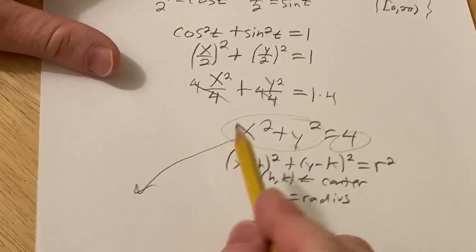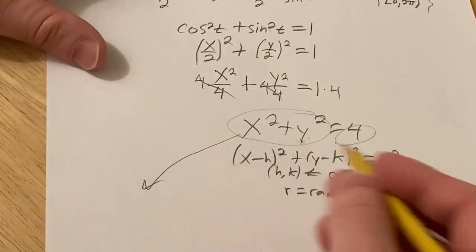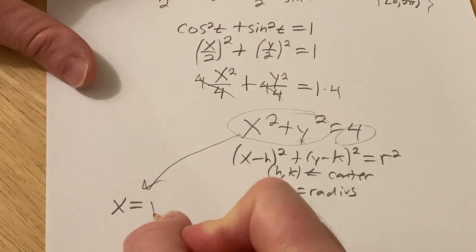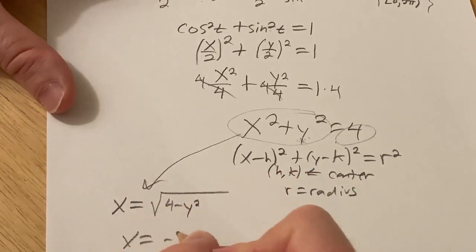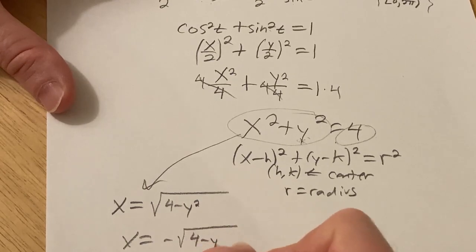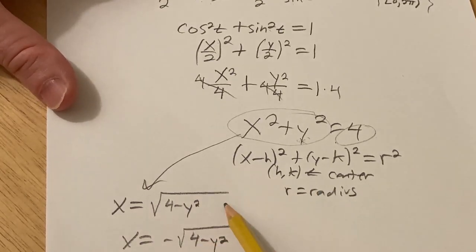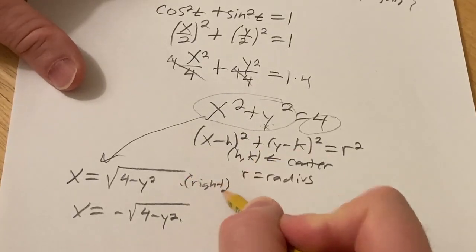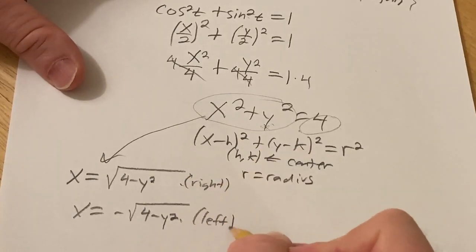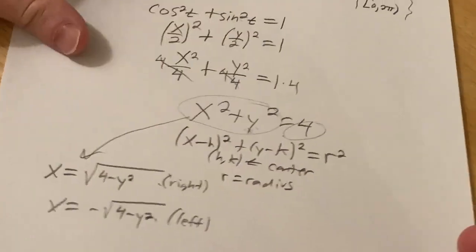if I solve this for x, I subtract the y squared and take the square root, you would get this and you would get this. This would be the right half of the circle, this would be the left half. So this would be the right half, this would be the left half. So together these rectangular equations would give you the circle.